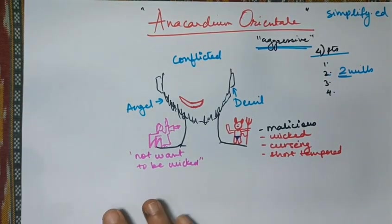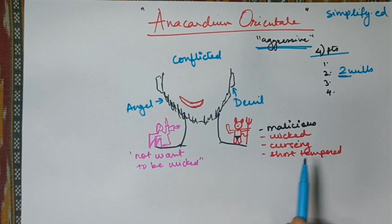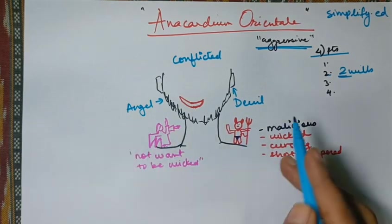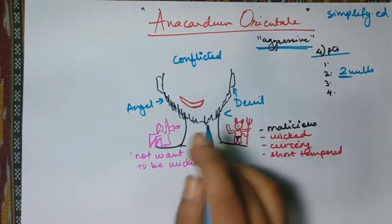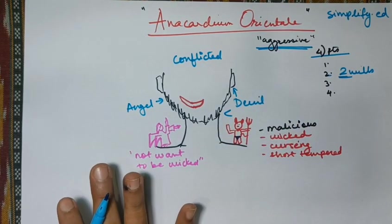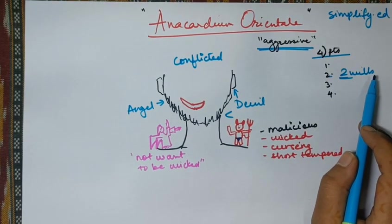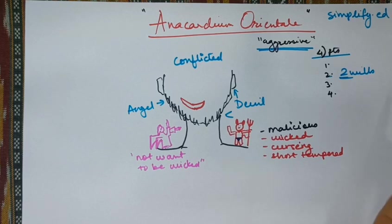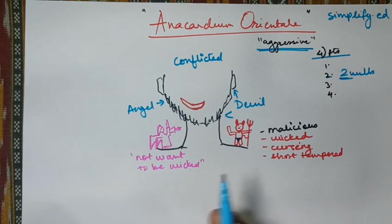So he has a little bit of guilt associated with it as well. But the main thing is that when he is trying to be wicked or when he is trying to curse, he also has something in him that is stopping him. But usually in Anacardium, the maliciousness or the devil overpowers the angel. So this is the first thing. Feels as though he has two wills. One commanding to be something which the other one is forbidding and other forbidding him to do something which the other one is commanding.